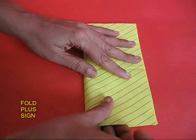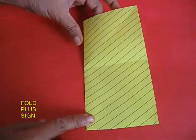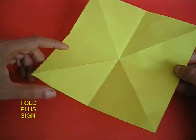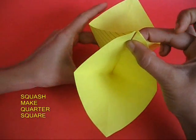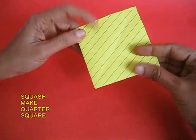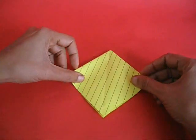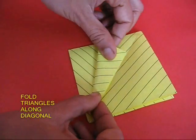Then upturn the paper, fold a minus sign, open the paper, rotate it by a quarter turn and fold a plus sign. Then you squash the paper so that it becomes a quarter of its original size.